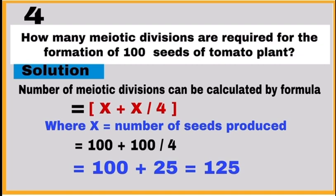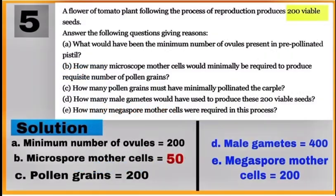In question number 5, you have to tell the minimum number of ovules, microsporangium mother cells, pollen grains, male gametes, and megasporangium mother cells required to produce 200 viable seeds in tomato plant.